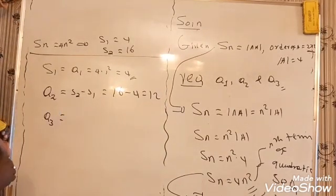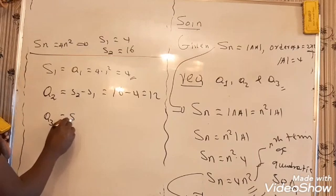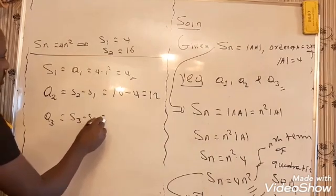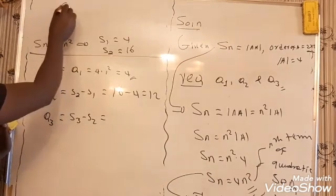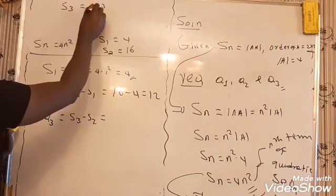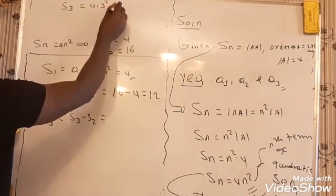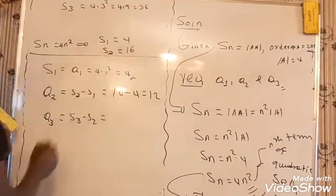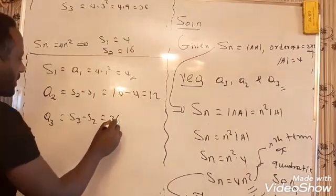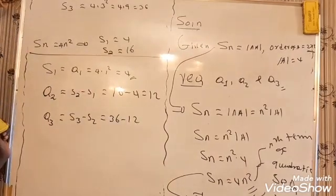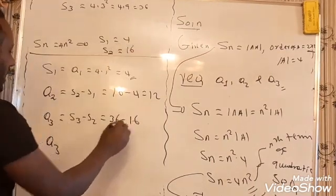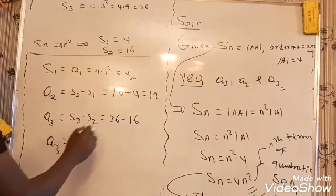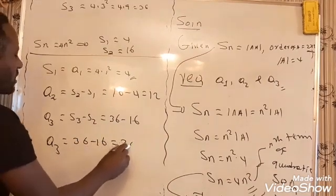A3 for the sequence is S3 minus S2. S3 is exactly 4 times 3 squared, which equals 36. So A3 equals S3 minus S2, which is 36 minus 16, which is already 20.